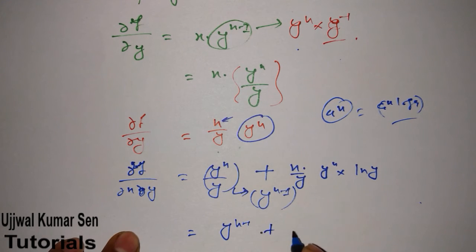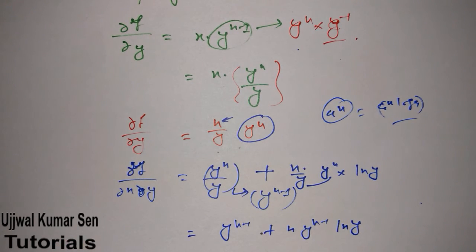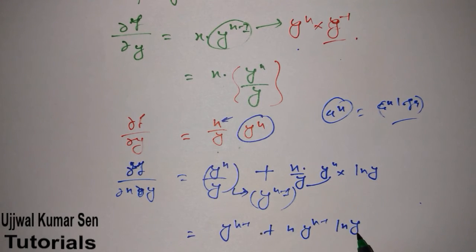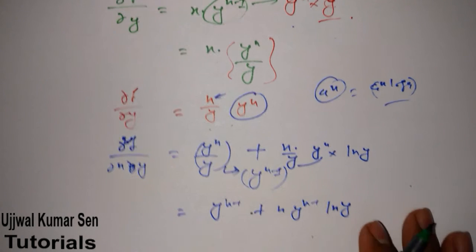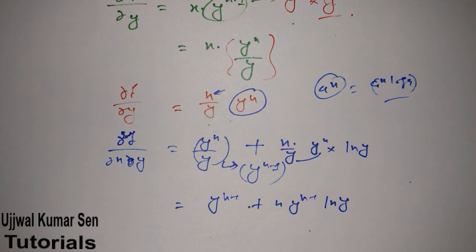So we get y^(x-1) plus x times y^(x-1) times ln(y). Sometimes by misconception we say this is 'L' but this is actually ln for natural log.